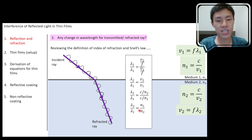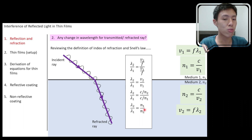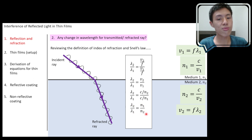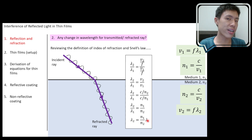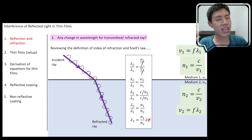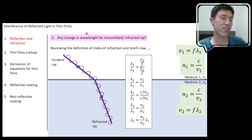For example, if medium one is air, λ1 is usually known, and n1 = 1.00. If medium two is water with n2 = 1.33, you can easily find the wavelength in water. So λ2 = (n1/n2) × λ1. Typically we have the wavelength in air or vacuum as λ1, and we know the indices of refraction for both media. This is a very handy equation which we'll use to derive the equation for studying the interference of refracted light in thin films.